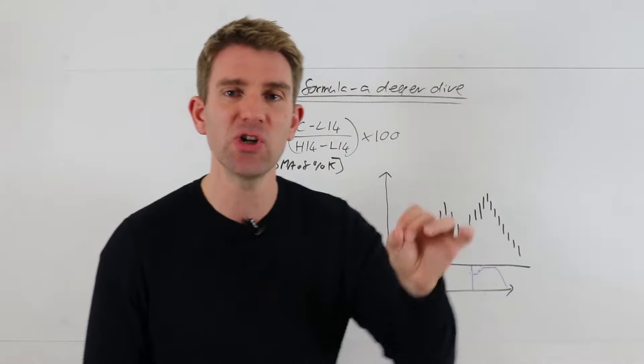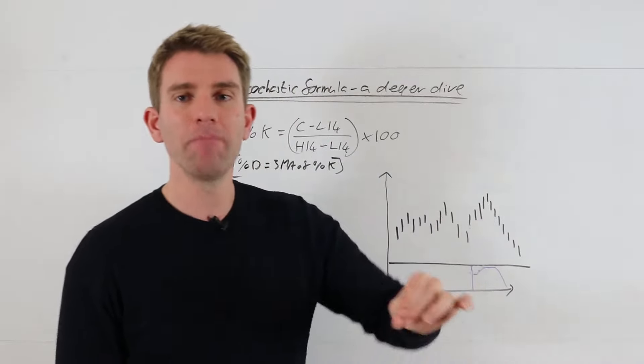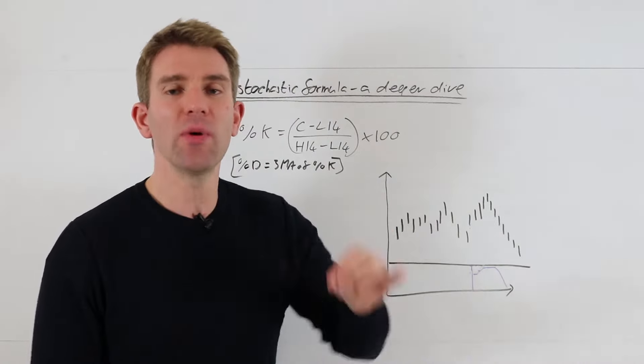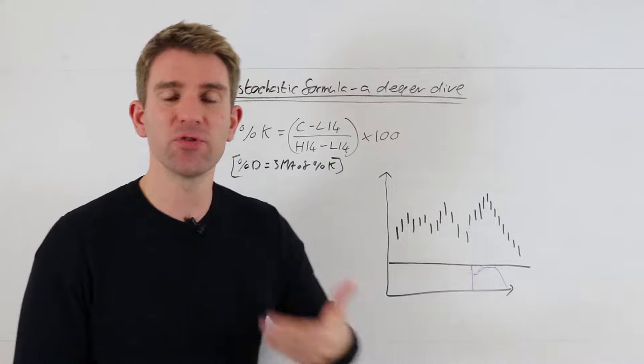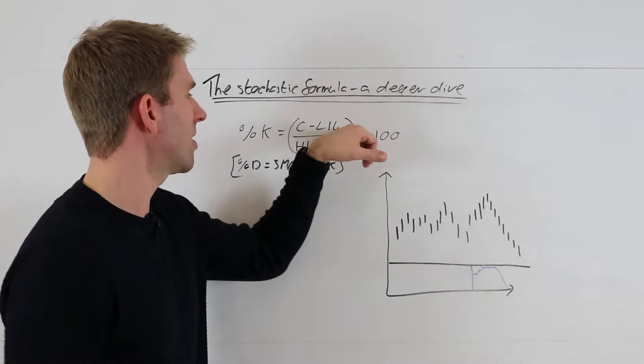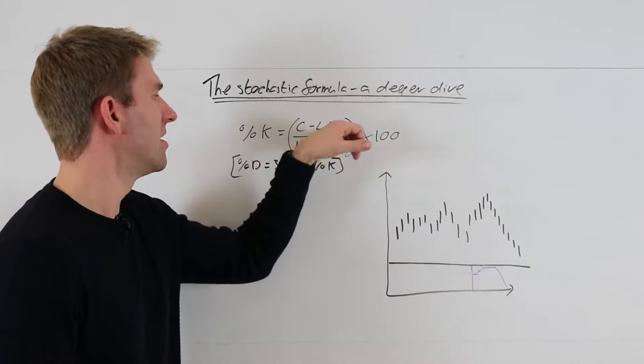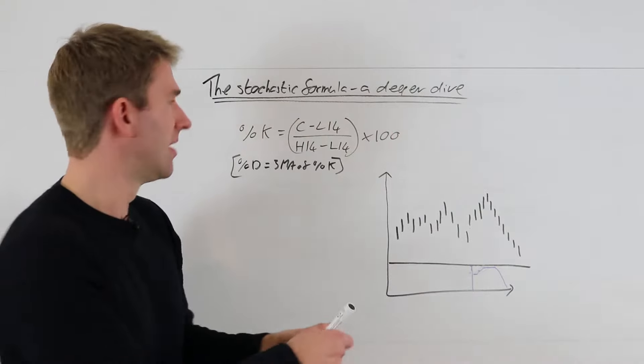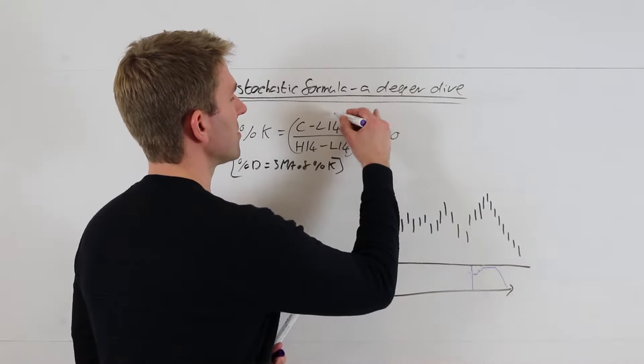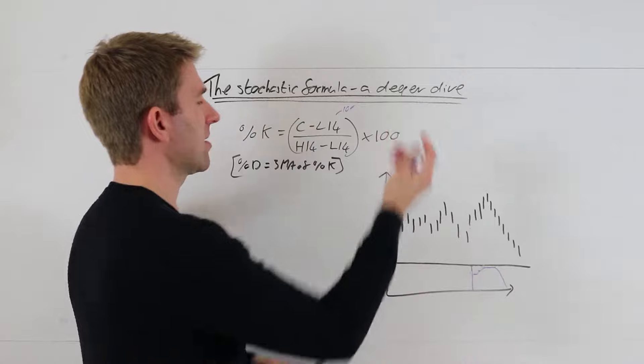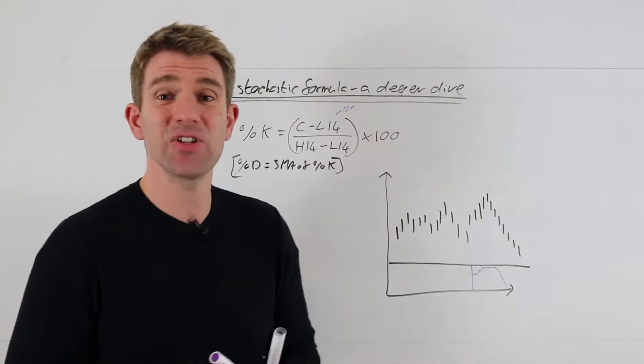Because if this is zero, we've got times 100, we're going to get zero. So that's seriously oversold. We're going to get the most oversold condition ever if we are at the low or the lowest point we've been for the past 14 days. Let's say that number is 100, our low is 100, our current price is 100, 100 minus 100 equals zero.